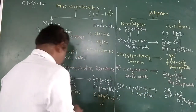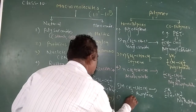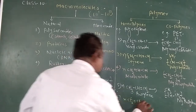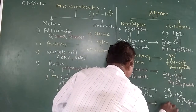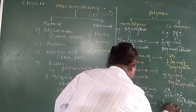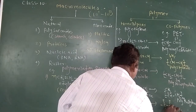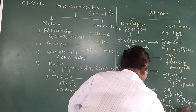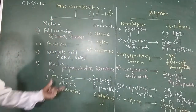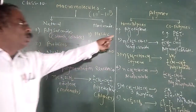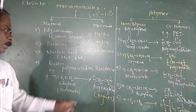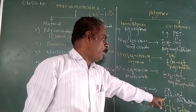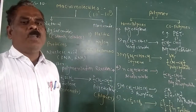The last example is teflon: CF2=CF2 undergoes polymerization to form polytetrafluoroethylene (teflon), represented as (CF2-CF2)n. All of these — polyethylene, polyvinyl chloride, polystyrene, polyacrylonitrile, polypropylene, and teflon — are best examples of homopolymers.